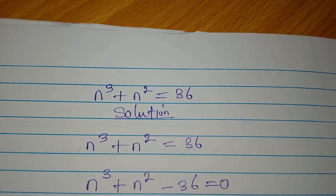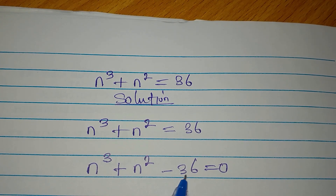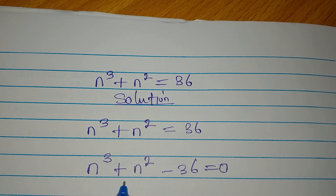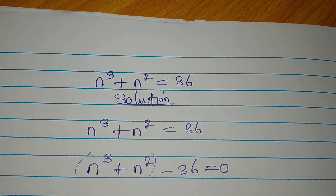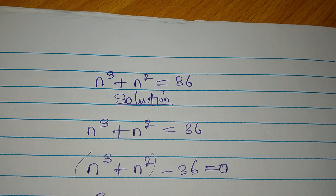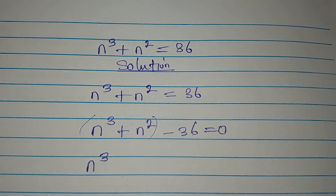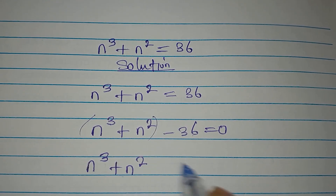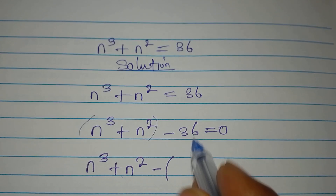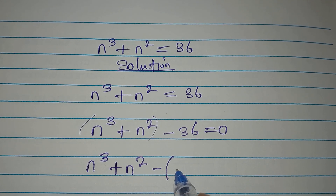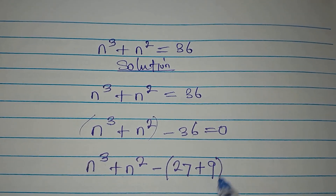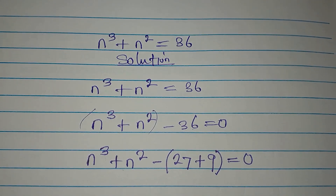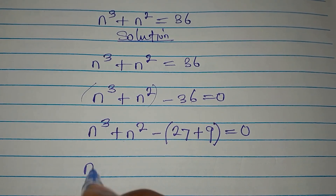If you have this minus this to get zero, it means that the whole of this should be equal to 36. So let's write this 36 in the form of these two. n to the power of 3 plus n to the power of 2 minus 36 is the same thing as 27 plus 9, and this equals zero.